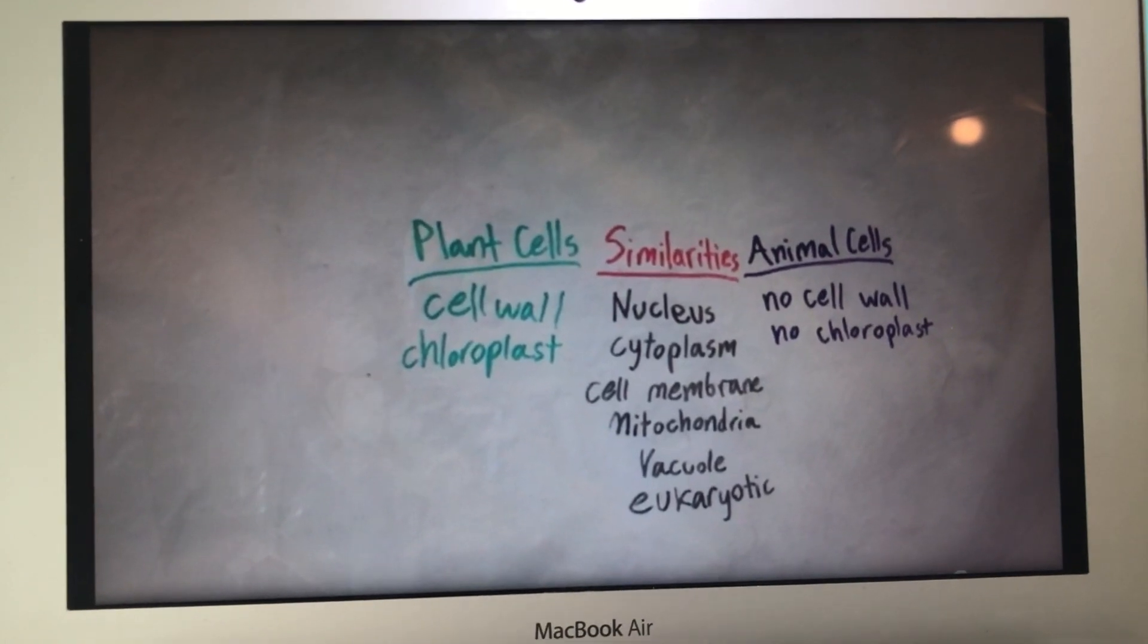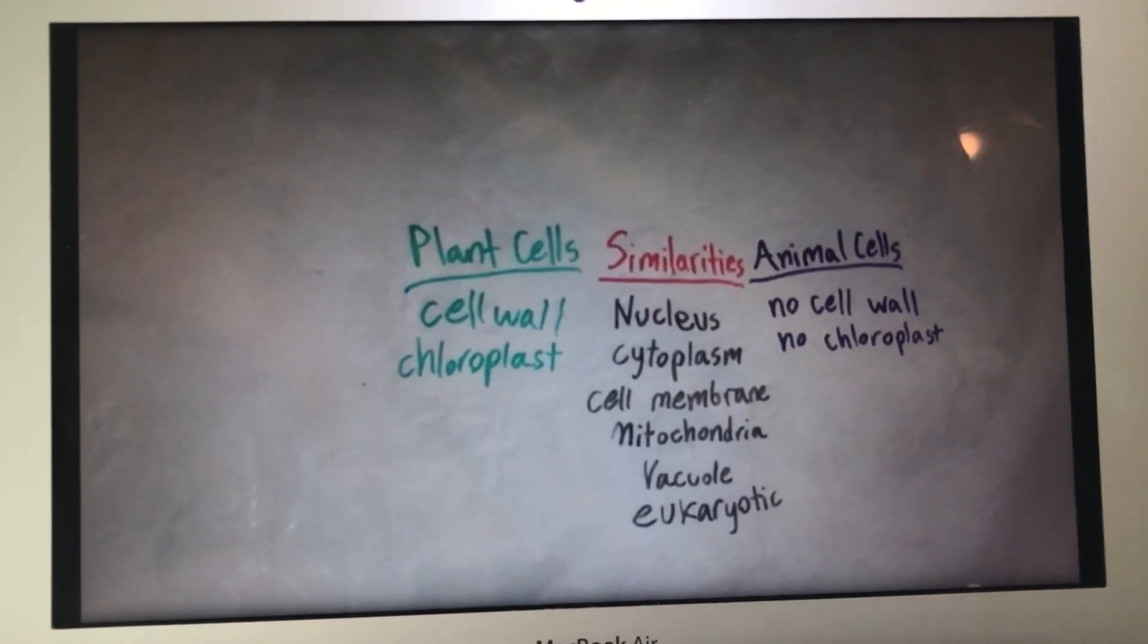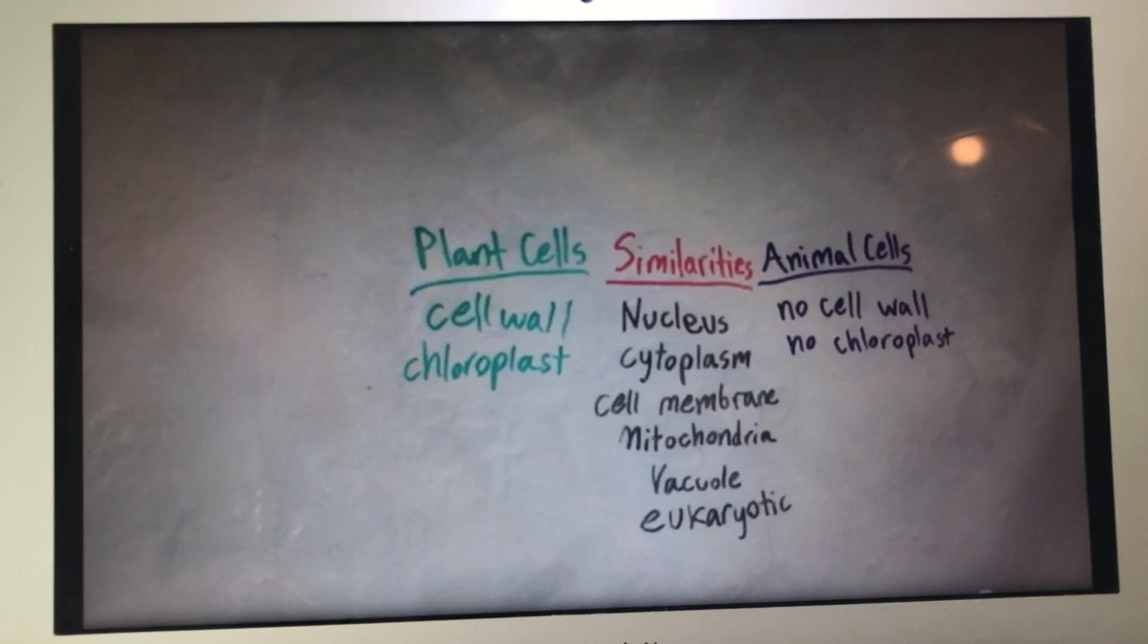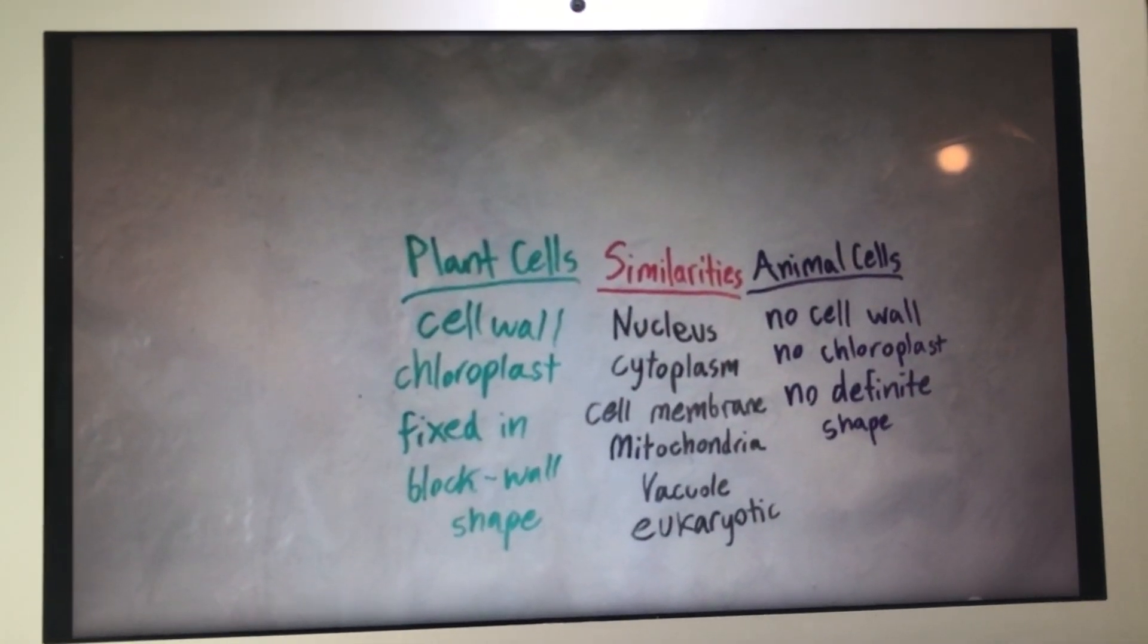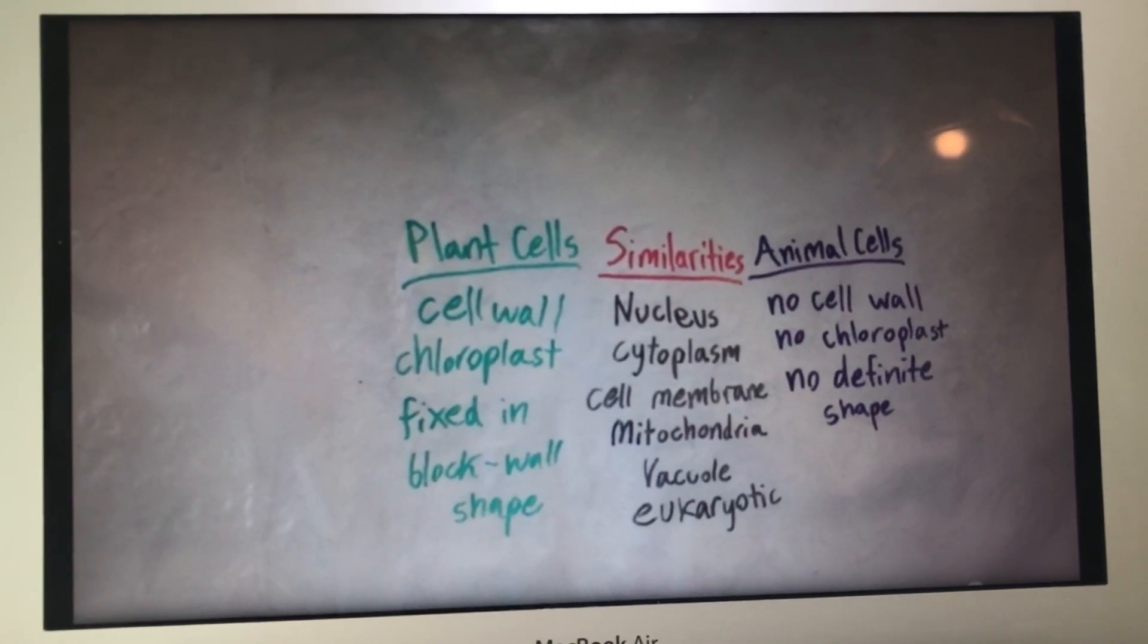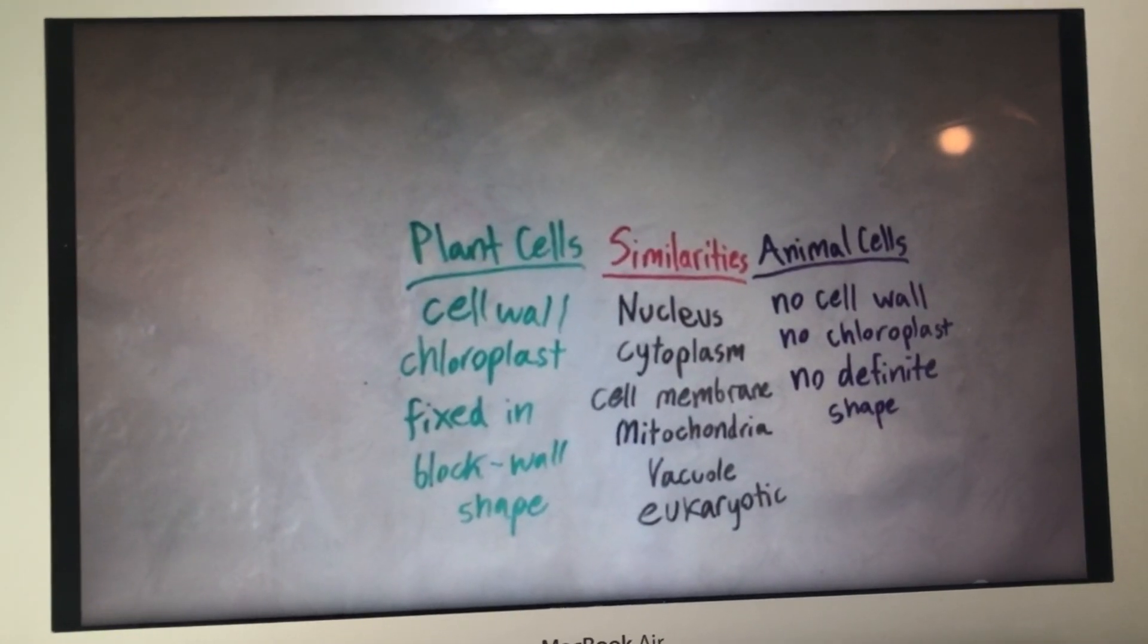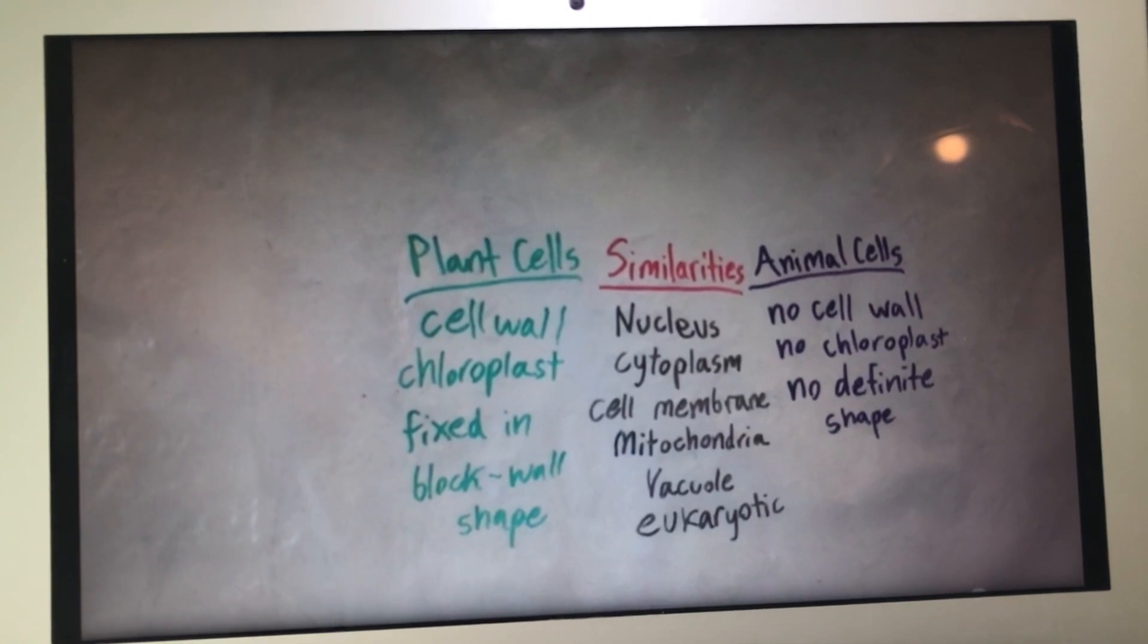The difference is that the plant cell has a cell wall and chloroplast. Animal cells don't. The plant cell is mostly fixed in a block wall shape, which is why it has structure. The animal cell, however, has no definite shape.